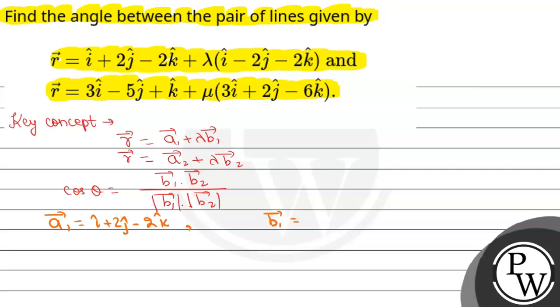b1 is i cap minus 2 j cap minus 2 k cap. Similarly, vector a2 is 3 i cap minus 5 j cap plus k cap and vector b2 is 3 i cap plus 2 j cap minus 6 k cap.